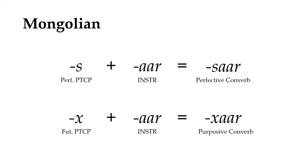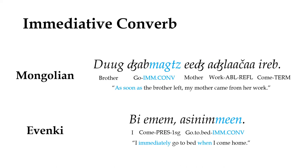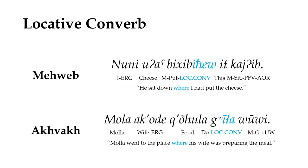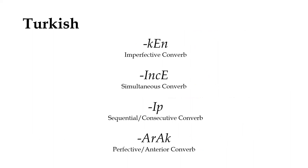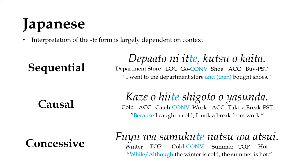Those are some of the most common types of converbs, but individual languages will often mix and match case markers and verb forms to create some very specific interpretations. Some languages have a terminative converb that marks the converb clause as the condition under which the main verb will end, some have a converb that emphasizes that the two clauses happen immediately one after the other, some have a converb that defines the two clauses as happening in the same location, or any number of other specialized interpretations. Languages may vary in the number of converbs they distinguish, ranging from only a handful, like Turkish, to as many as several dozen, like Korean or Ahvah.